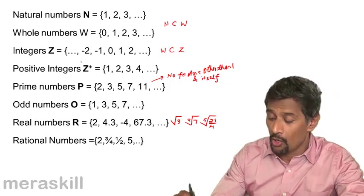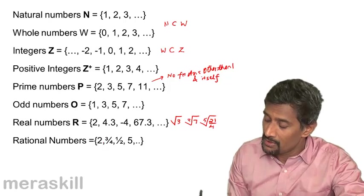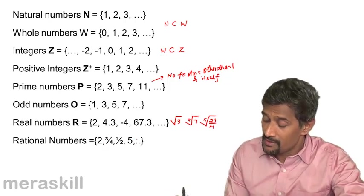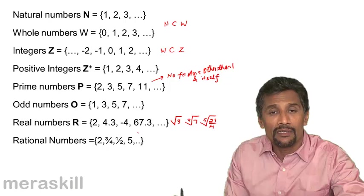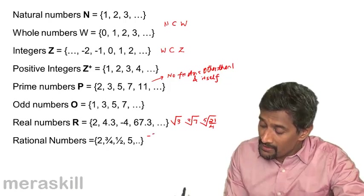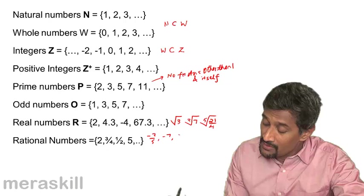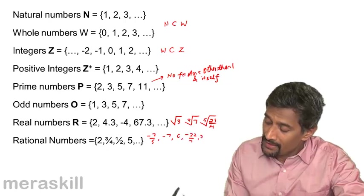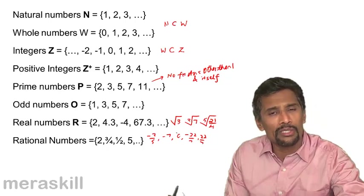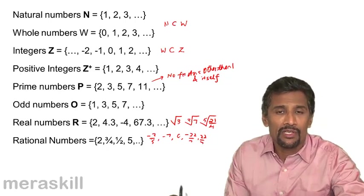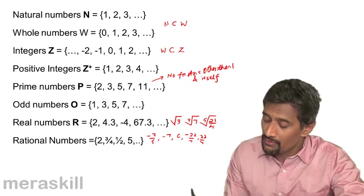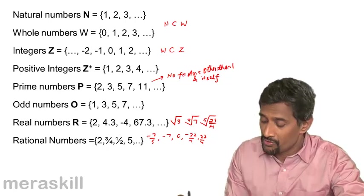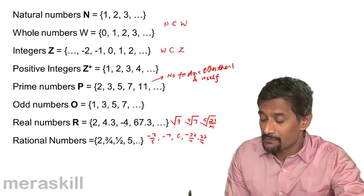Real numbers is like the universal set for all these numbers. Rational numbers are all those numbers which could be fractions, negative integers, even integers like -3/5, -7, 0, -22/7, 22/7. All positive negative fractions, all positive negative integers along with 0 will form rational numbers.